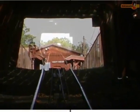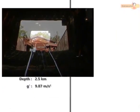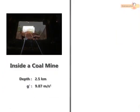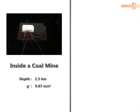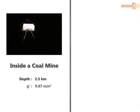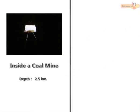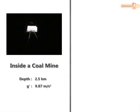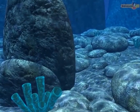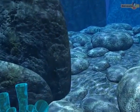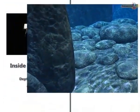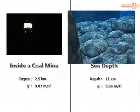Therefore, at a depth of 2.5 kilometre inside a coal mine, G' is 9.87 metre per second square. While on the seabed, 11 kilometre below, G' decreases to 9.86 metre per second square.